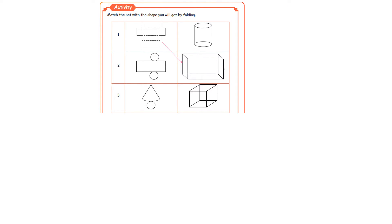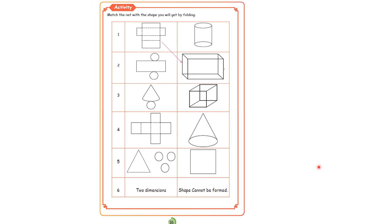Match the net with the shape you will get by folding. From the first net you are getting a cuboid. From the second net you get a cylinder. From the third net you will get a cone. From the fourth you will get a cube. The fifth one is two-dimensional — no 3D shape can be formed. These are all three-dimensional shapes, and this is two-dimensional — a shape cannot be formed.